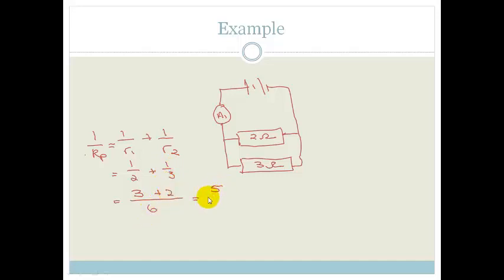plus 3 goes into 6 twice, 2 times 1 is 2. So, therefore, this is 5 over 6, but that's 1 over R parallel. So, R parallel,